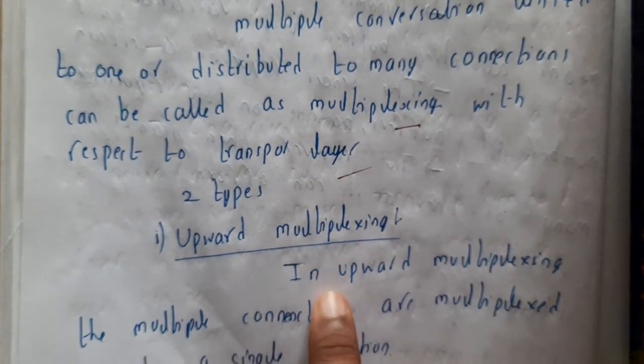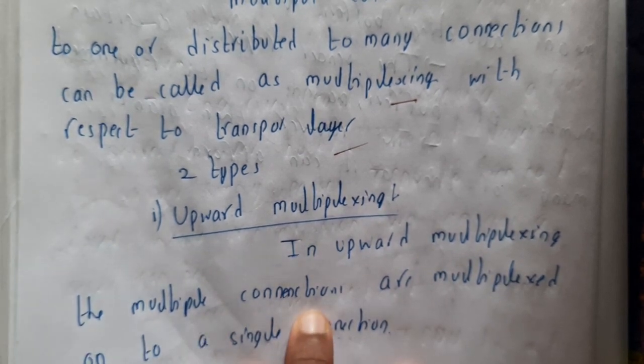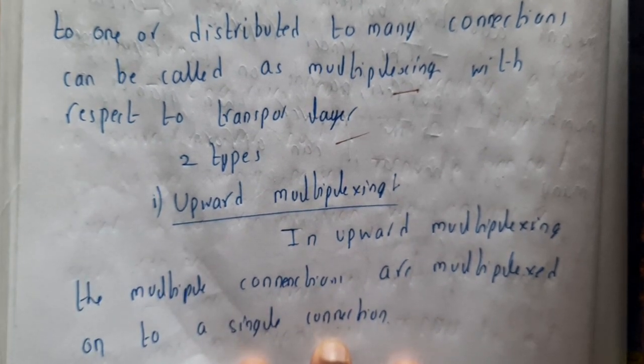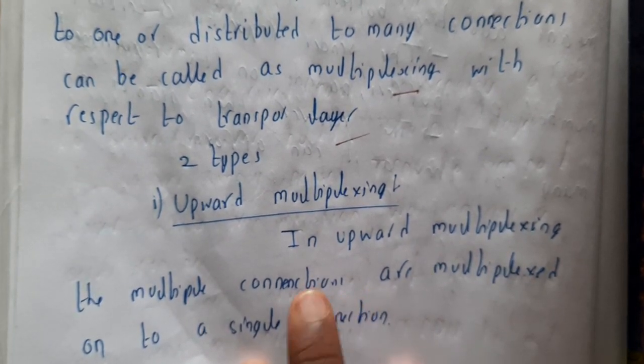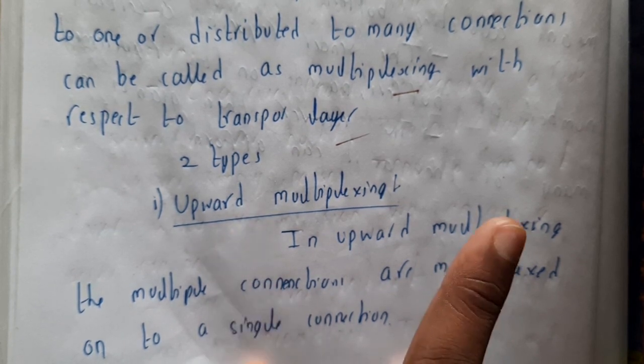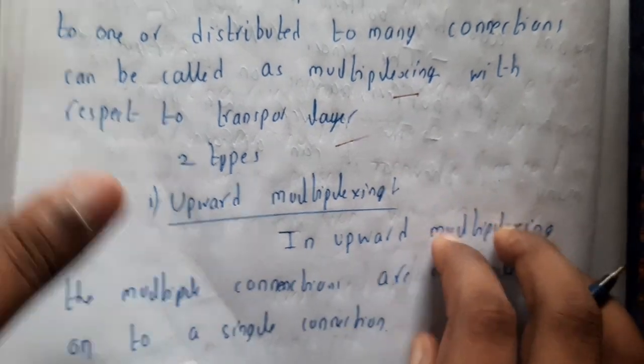In upwards multiplexing, the multiple connections are multiplexed onto a single connection. The only thing that you should remember is the directions will be completely reversed. Here we are saying upward, but if you observe the diagram it will be downwards.